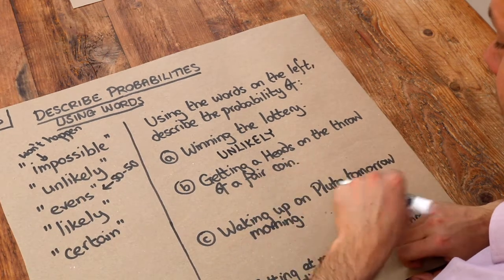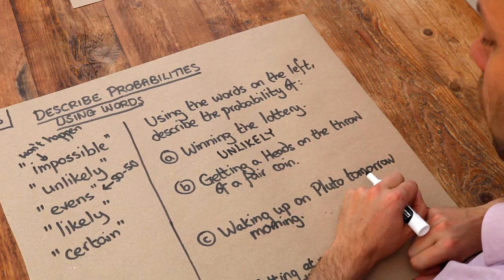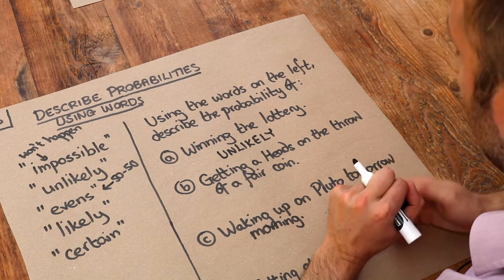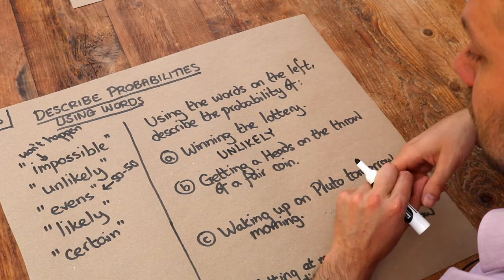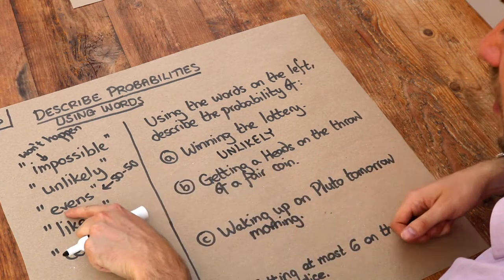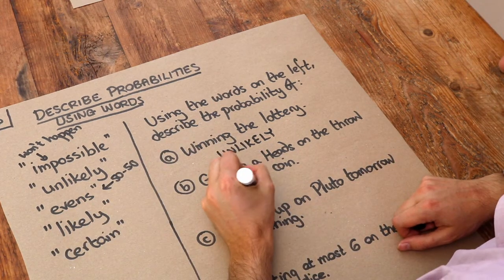What about getting a head on the throw of a fair coin? Well, if it's a fair coin, we're equally likely to get heads as we are to get tails. So that we said was even. So the chance is evens.